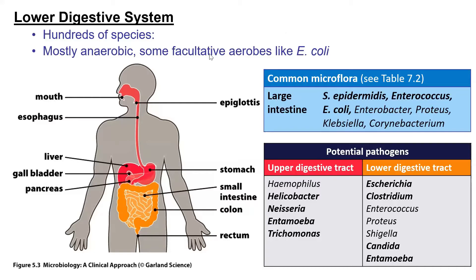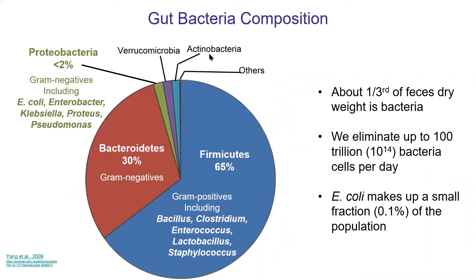We'll talk about probiotics in a minute, but a few other things about the digestive system. This is talking about what a typical gut bacterial composition looks like. The big groups are these phyla — Bacteroidetes and Firmicutes. Bacteroidetes are gram-negatives, and that does include E. coli. There are a few others we're not really talking about in this course: Enterobacter, Klebsiella, and Proteus, which are important gut pathogens. Pseudomonas aeruginosa is on that list too.